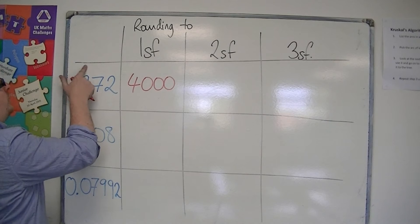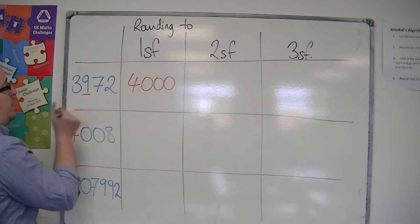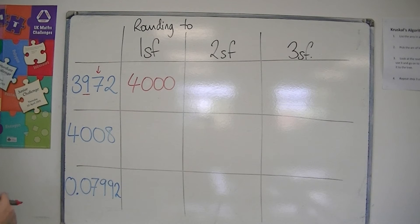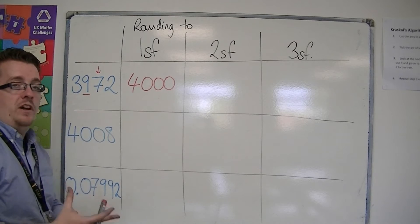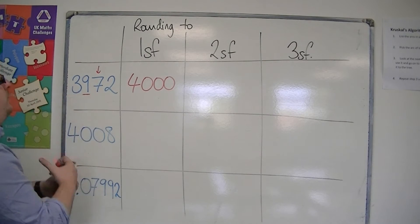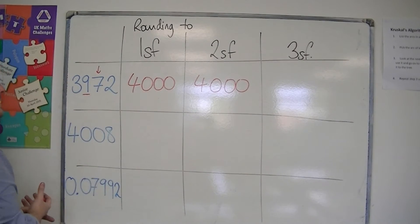So then rounding to two significant figures, I look at the second significant figure column. I have one to the right. The seven tells me that I need to round up. So the nine would round up to 10, effectively. So the 39 would round up to 40. So this is also 4,000 to two significant figures.